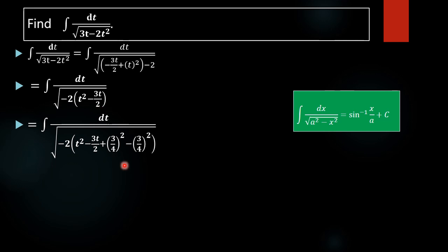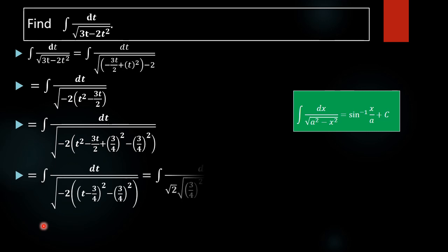Taking half the coefficient of t gives negative 3 by 4. We square it and add and subtract that square. This gives an expression of the form a squared minus 2ab plus b squared, where 2 into 3t by 4 cancels by 2 to give 3t by 2. We rewrite it as t minus 3 by 4 whole squared, that is a minus b whole squared, minus 3 by 4 squared.